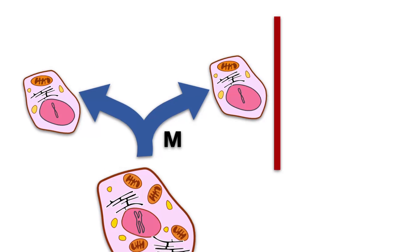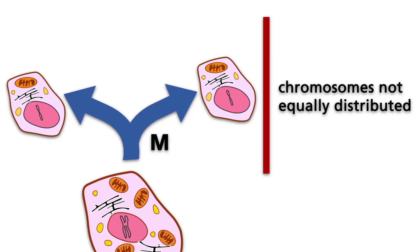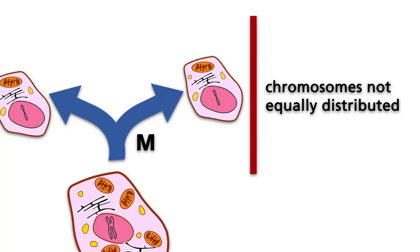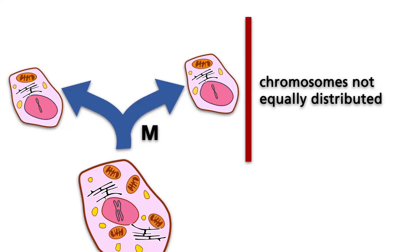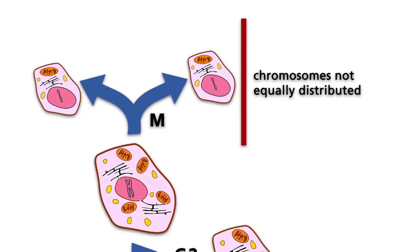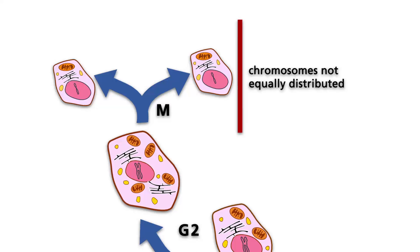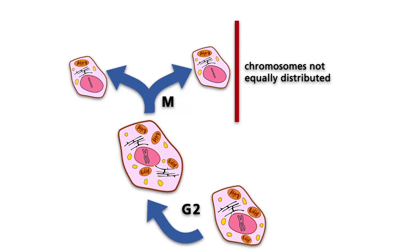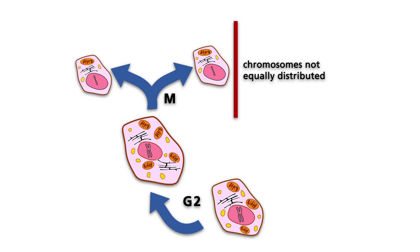At this checkpoint, an internal multiprotein complex, the anaphase-promoting complex, or APC, assists the cell as it passes through. The APC includes a ubiquitin ligase that initiates the degradation of the protein securin, which acts to inhibit the separation of the chromatids during the anaphase. In other words, APC is responsible for the equal distribution of the chromatids to the two newly emerging cells.